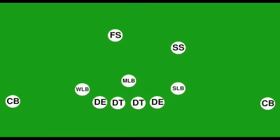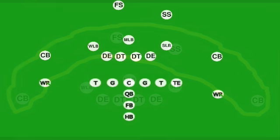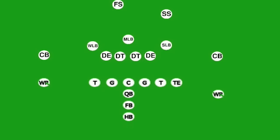Now let's learn two basic formations used in football. Let's start off with the 4-3. This is the basic defense of most teams. It consists of four defensive linemen, three linebackers, and four defensive backs, or two safety backs and two cornerbacks. When the offense lines up with two receivers, this formation is effective against both the run and the pass.